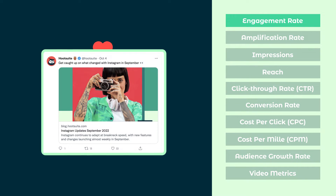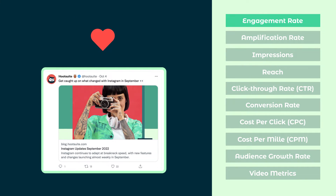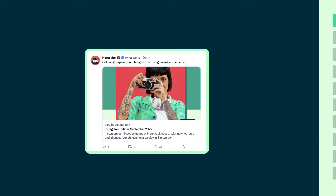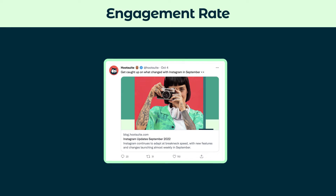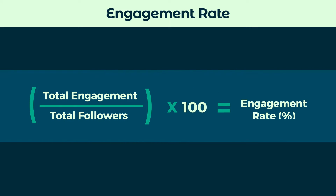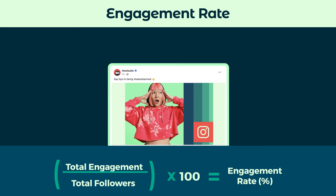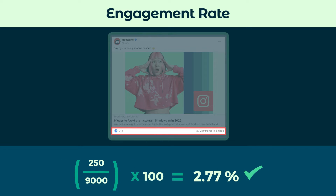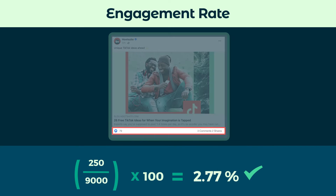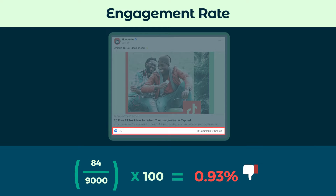First, if you want to know how specific content is being received by your followers, you'll want to find out your engagement rate. Engagement is the interactions you get on your posts — everything from likes, shares, and comments. Calculate this by taking the total engagement on a post and dividing it by your followers. A high engagement rate shows that a piece of content is performing well with your audience, while a low engagement rate might be a call to revise your content strategy.